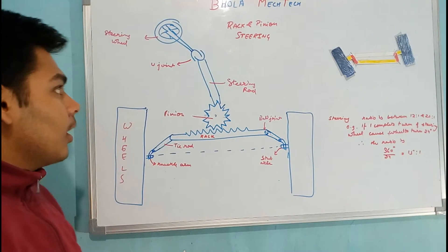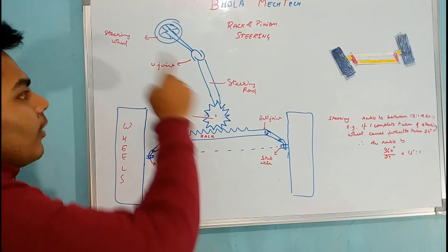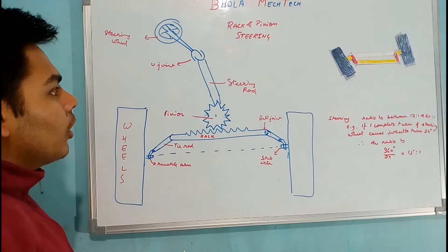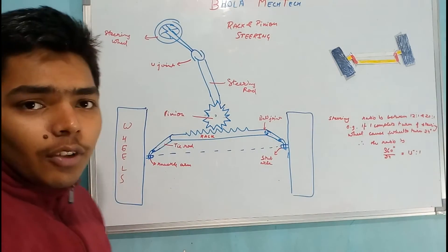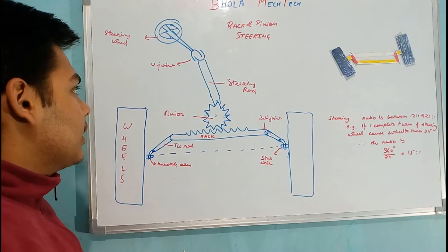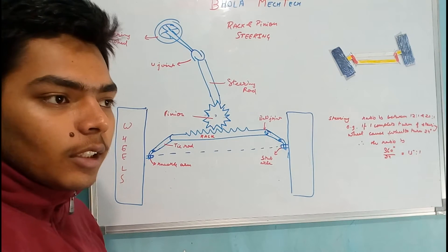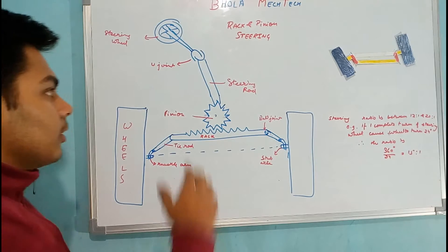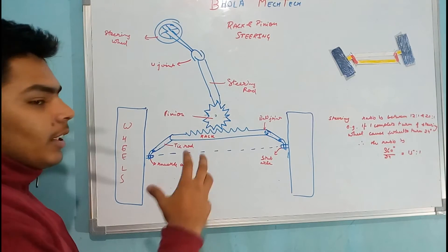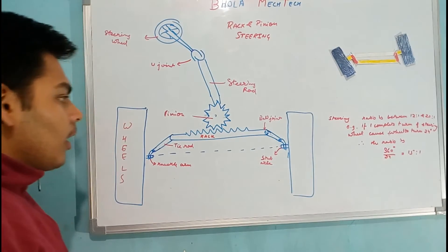Let's start. First of all, I must explain the components of the steering system. First is the steering wheel that is in your hand, then there is a steering rod connected by a U-joint to the steering rod. The U-joint is given so as to provide freedom of alignment of the steering wheel according to the ease of the driver. It doesn't give any restriction to the movement of the steering rod, but allows ease of alignment. Then the steering rod is connected to the pinion, which is a normal spur gear.